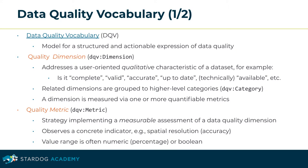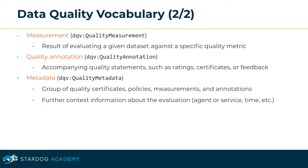Related dimensions are grouped to higher-level categories. A dimension is expressed via one or more measurable metrics. A metric encodes the strategy used to assess a dimension, such as accuracy, by means of an observable indicator — for example, spatial resolution. The value range of metrics is often numeric, percentage, or boolean. A quality measurement represents the result of evaluating a given dataset against a specific quality metric, indicating the measured value along with the unit.